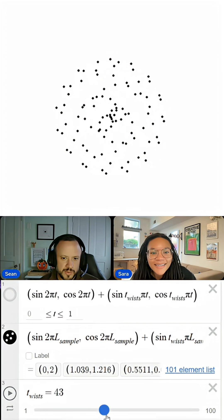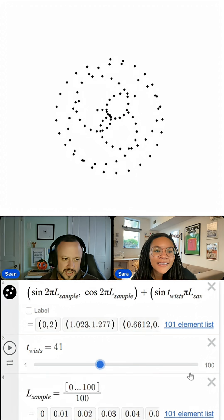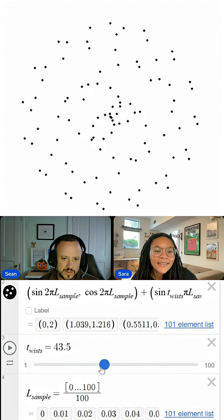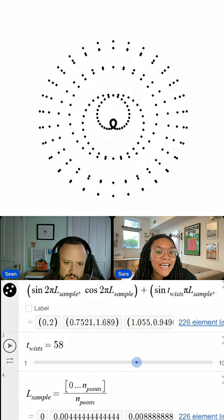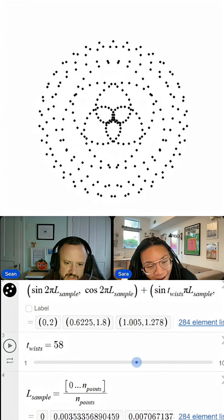And the crazy part about this is if you, as you change the number of twists and you sample a hundred times, all of these different patterns emerge. We can add like more and more points and we'll also see different patterns.